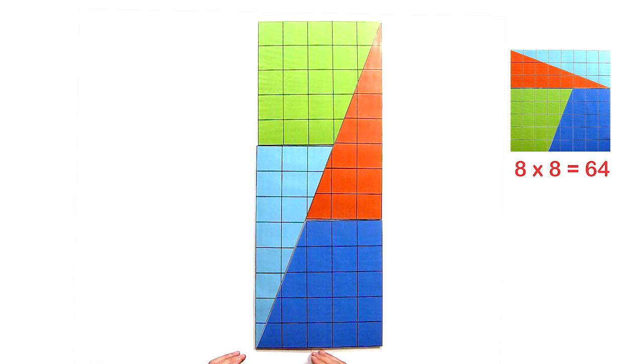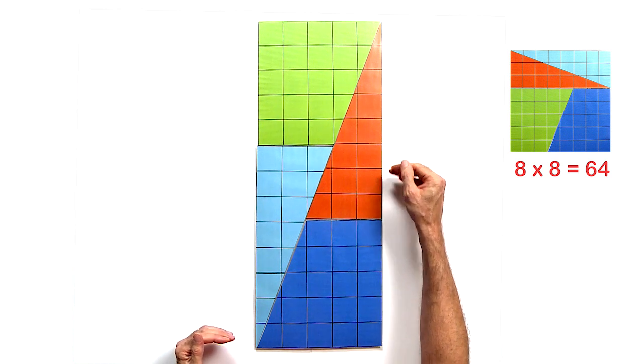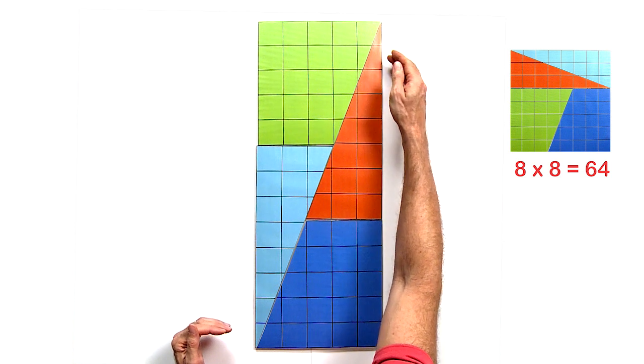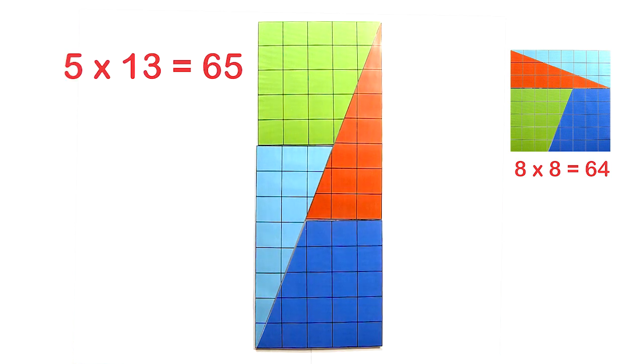The sides are 1, 2, 3, 4, 5 by 1, 2, 3, 4, 5, 6, 7, 8, 9, 10, 11, 12, 13. A 5 by 13 rectangle. So the number of small boxes here is 5 times 13 is 65.